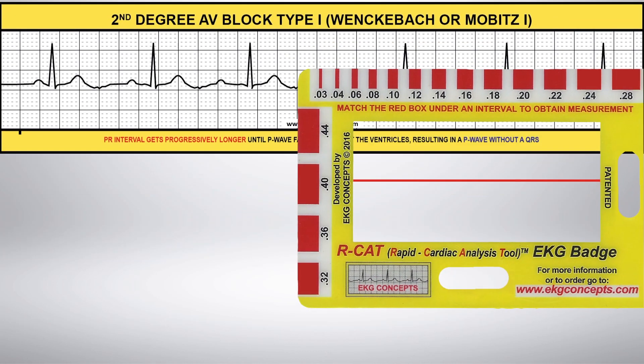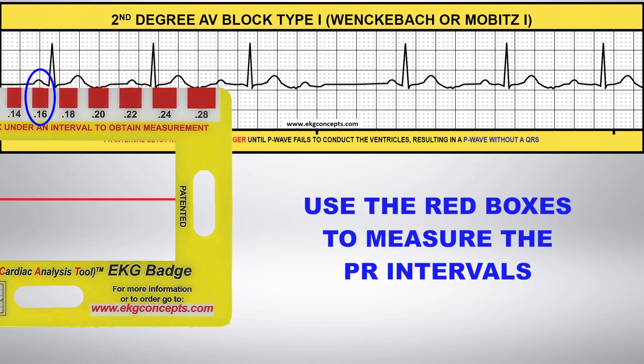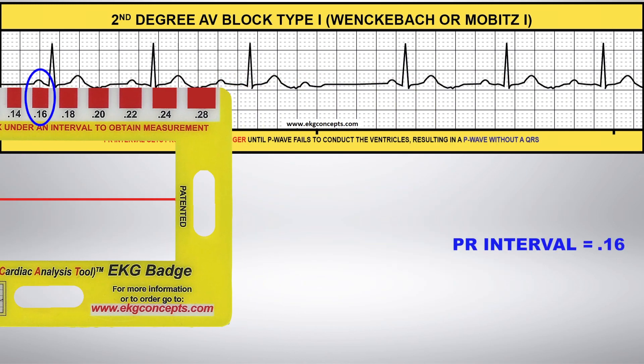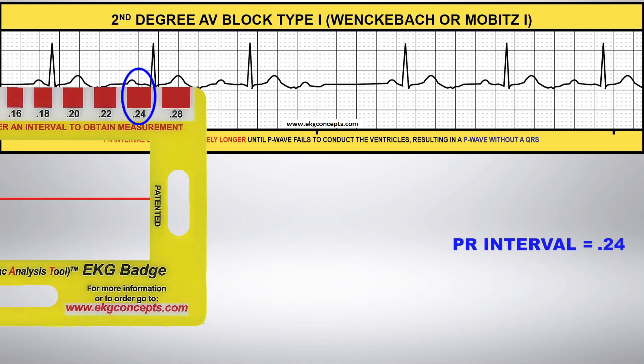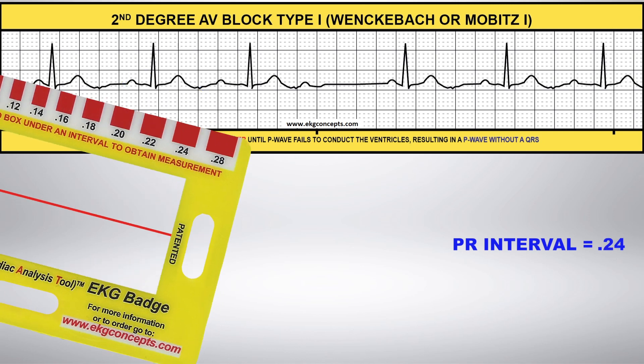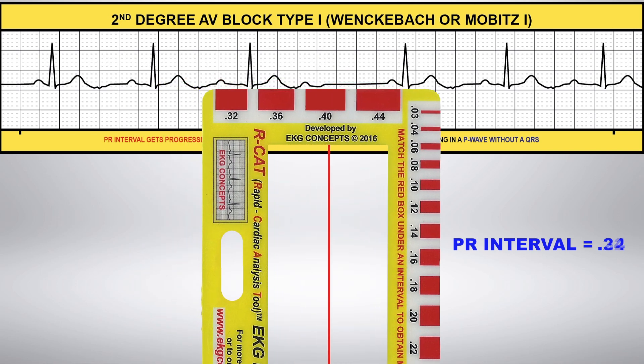Now flip the badge over and use the calibrated red boxes to measure the PR intervals. The first is 0.16, the second is 0.24, and the third is 0.32.